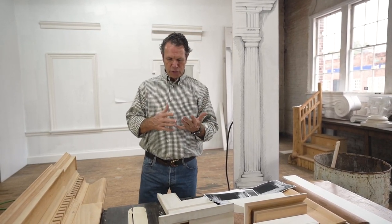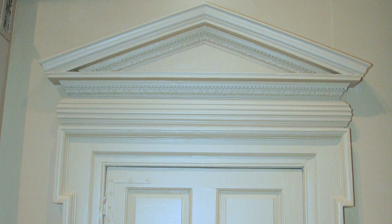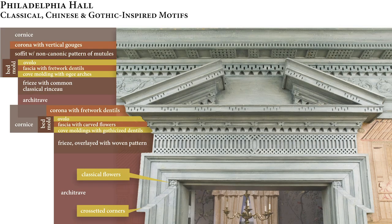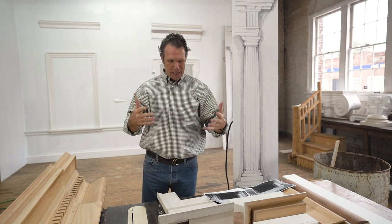In our Georgian video and in our upcoming Federal video, we're going to look a lot at door headers. You may remember the Charleston dining room — a beautiful pedimented door header over top of that door. You may remember Philadelphia Hall, with a beautifully decorated broken pediment. Those were beautifully elevated door headers. But how did they do it? What were the parts and pieces they used to put it together?